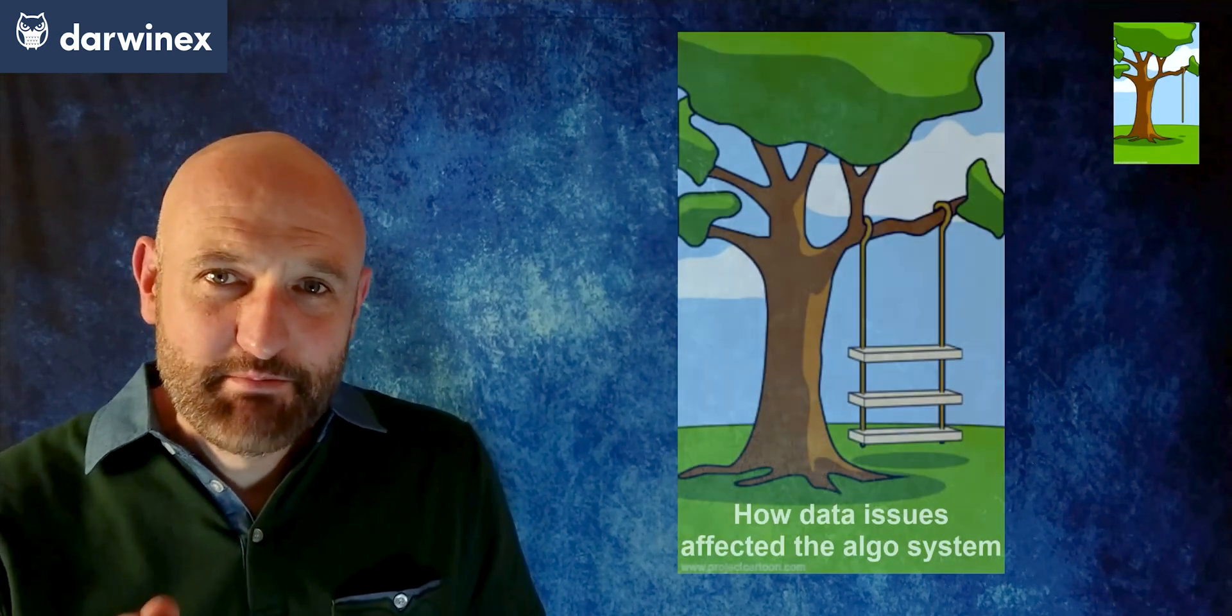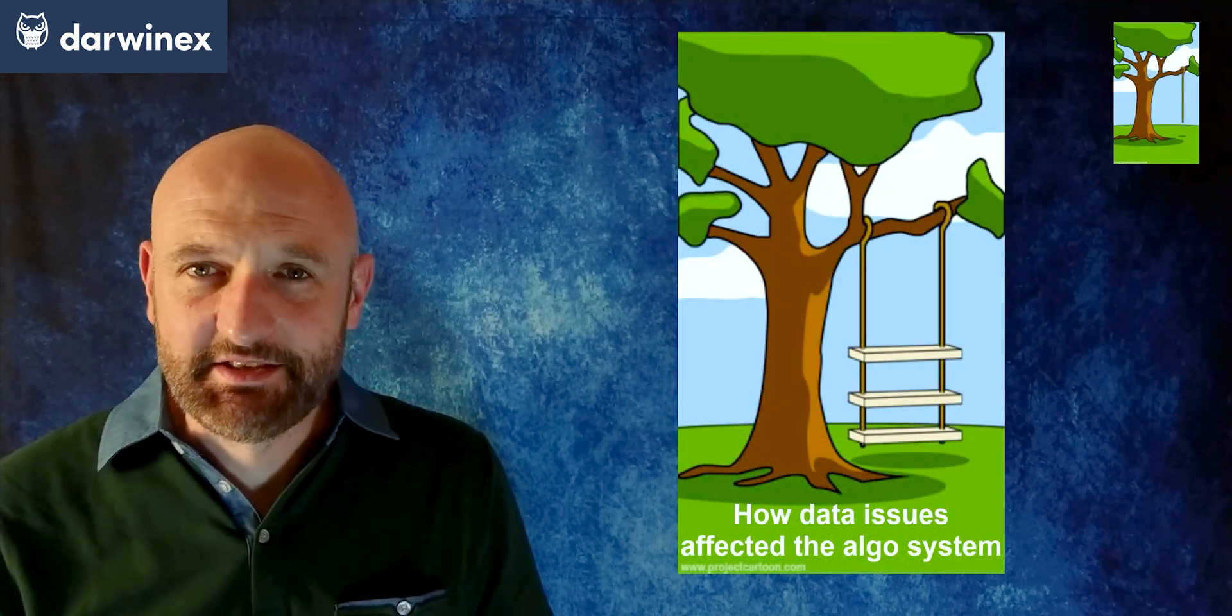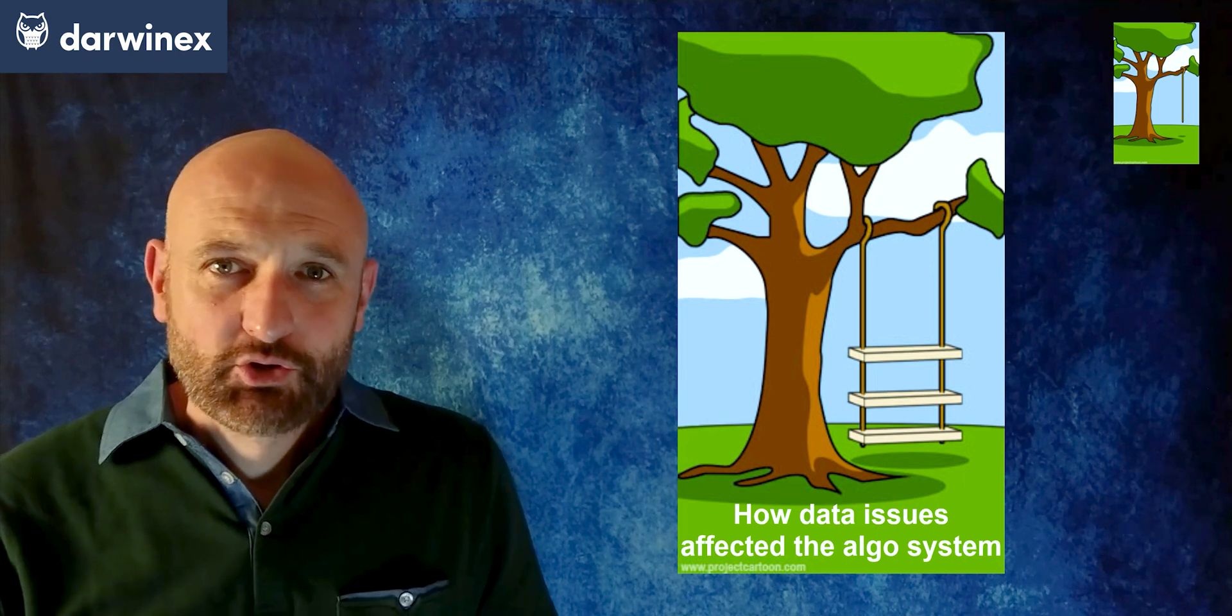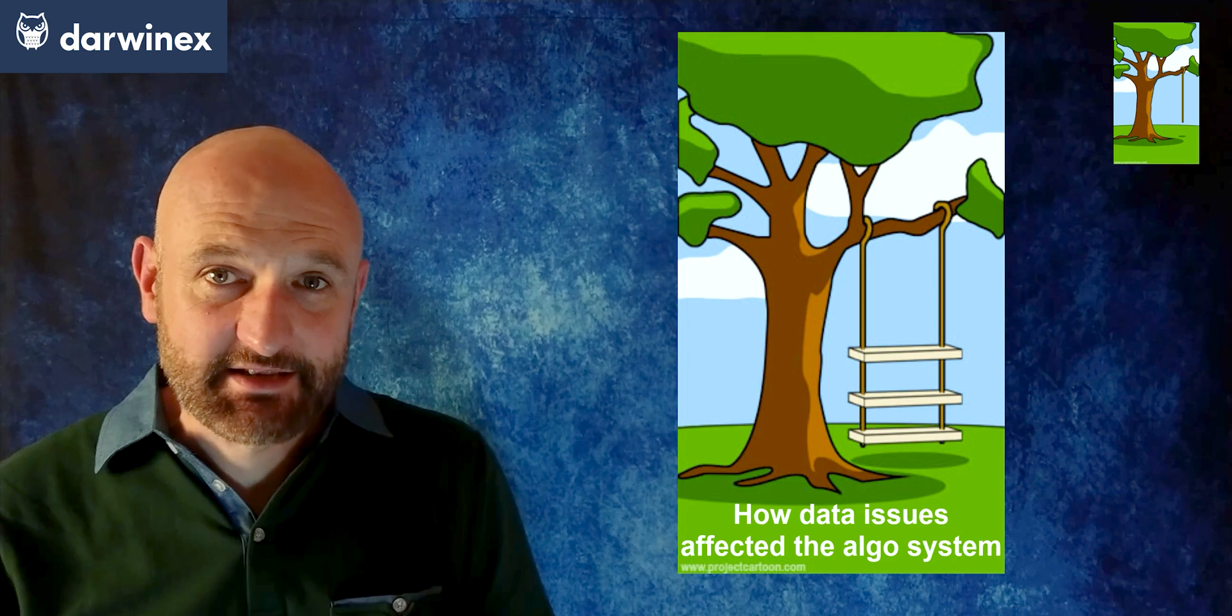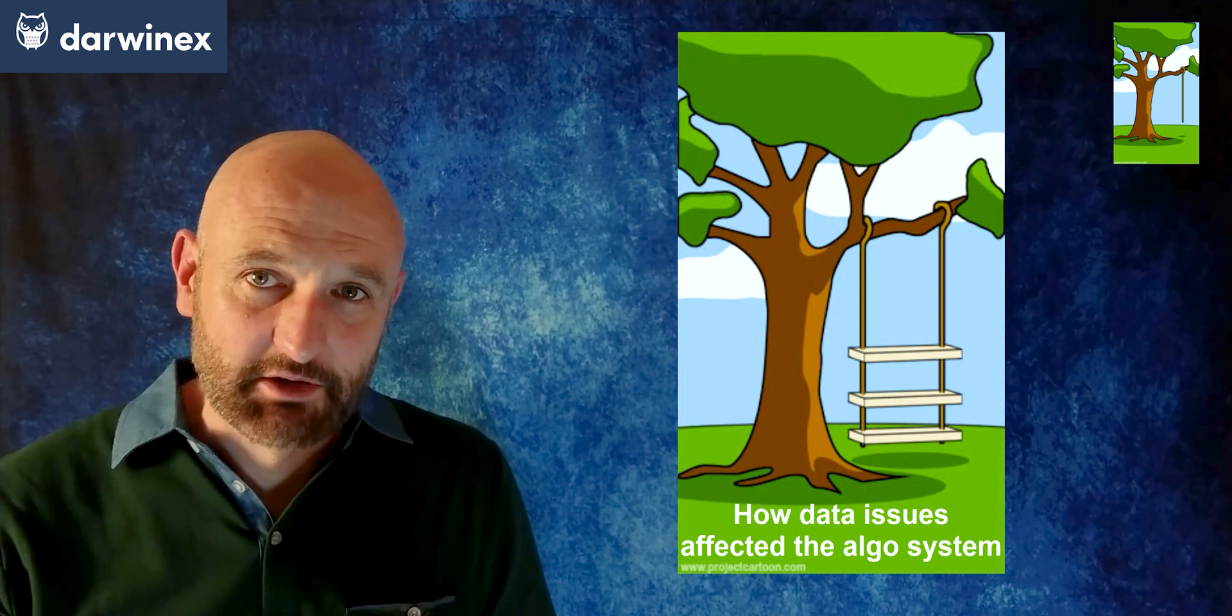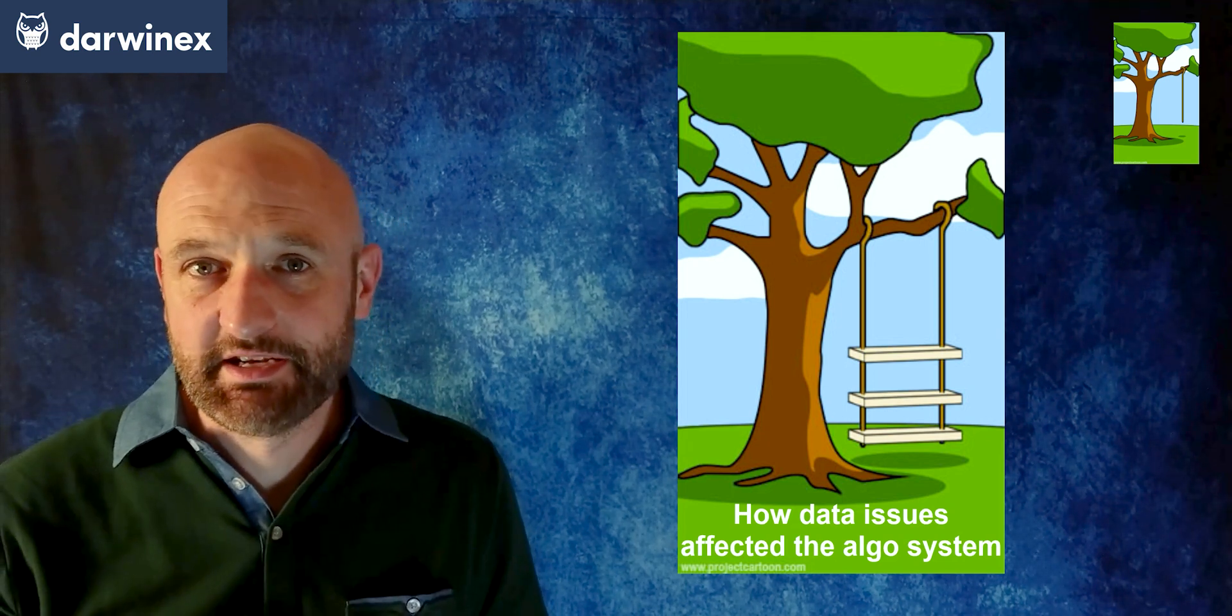How data misunderstandings affected the algo system. Traders not properly understanding the difference between the data used for backtesting models and the data experienced in a real-time price feed when you put your system live can cause huge discrepancies between backtest results and live results.